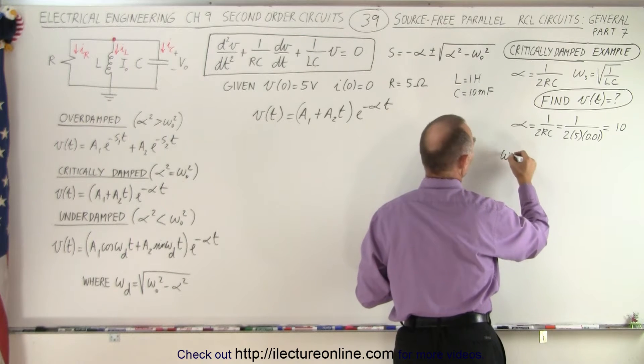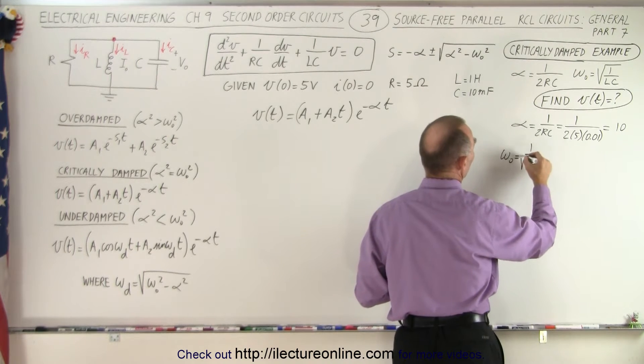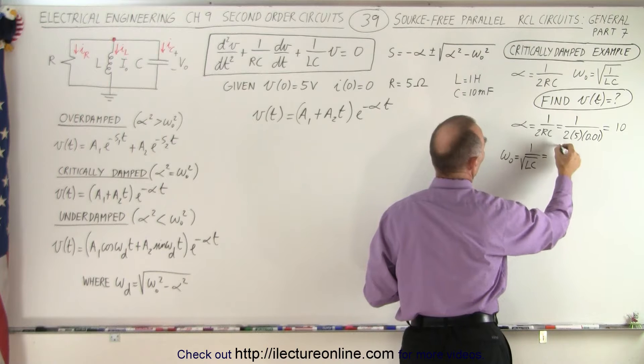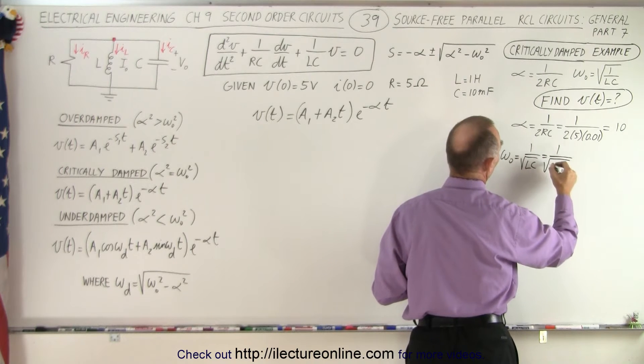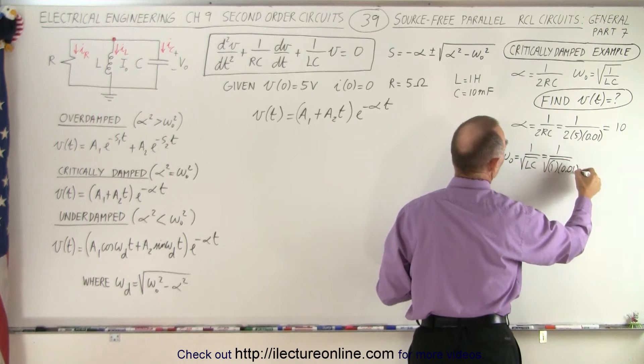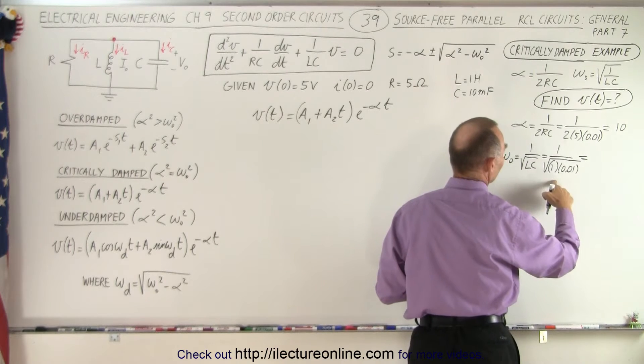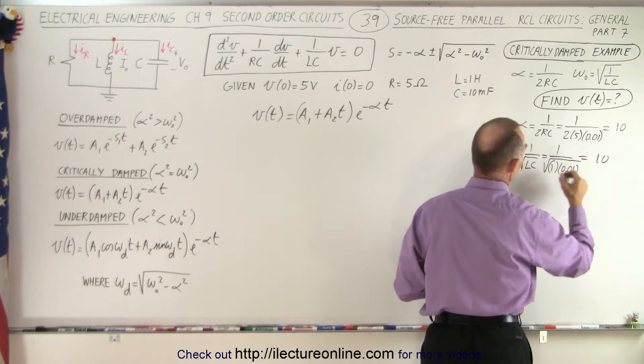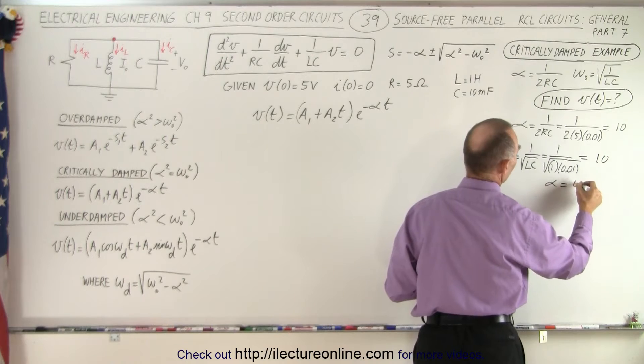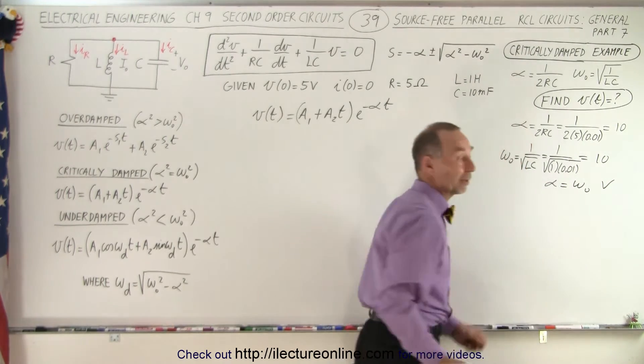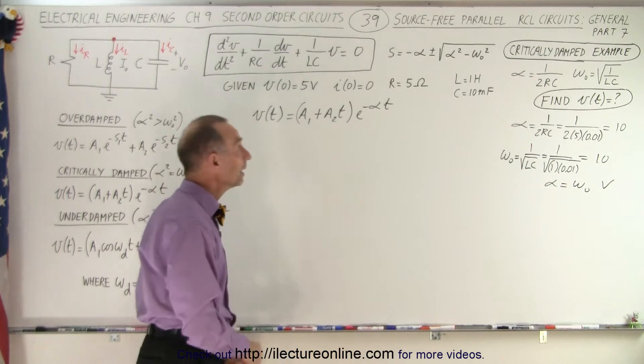And omega sub-naught was equal to 1 over the square root of LC which is equal to 1 over the square root of 1 times 0.01 and just like in the last example, that's also equal to 10. And notice that alpha is equal to omega sub-naught and so therefore we realize we're dealing with a critically damped case.